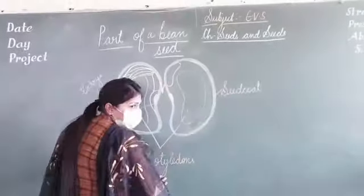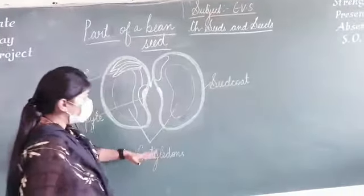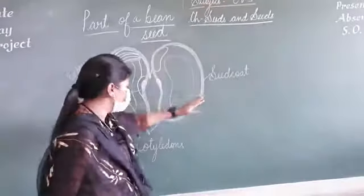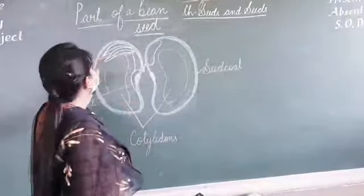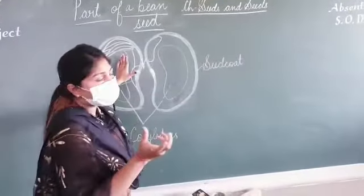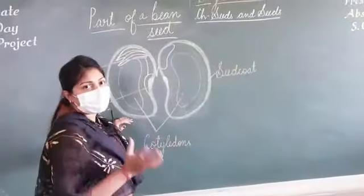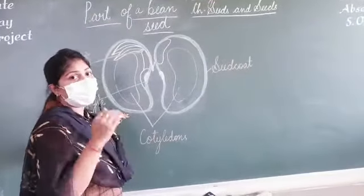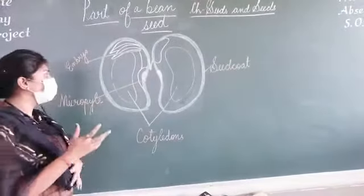So these are the four different parts of the seed. The seed coat is the outer covering that protects the seed. The cotyledon is the food for the plant. The embryo grows into a new plant. And the micropyle is the hole through which air or water goes inside the seed, and a new plant is formed.